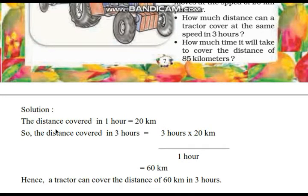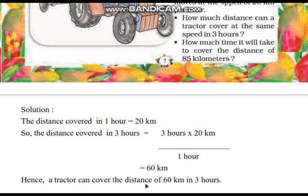Here is the solution. The distance covered in 1 hour is equal to 20 km. So the distance covered in 3 hours is equal to 3 hours multiplied by 20 km divided by 1 hour — by cross multiplication, that is 60 km. Hence a tractor can cover a distance of 60 km in 3 hours.